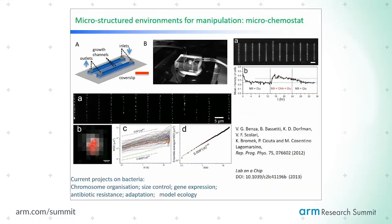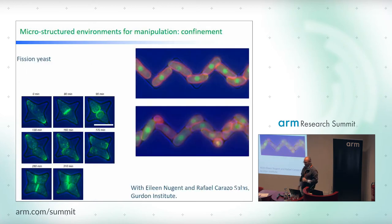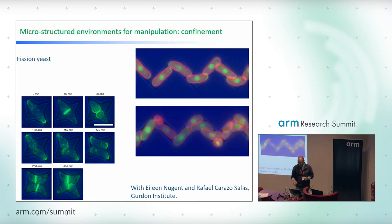An important phenotyping measurement is fluorescence: the bacteria are genetically modified so a protein of interest is expressed together with a fluorescent protein. By measuring how much fluorescent protein you have, you quantify the protein of interest. Slightly bigger channels can hold yeast cells — yeast is good for making beer and bread, and is also a model organism in biology.